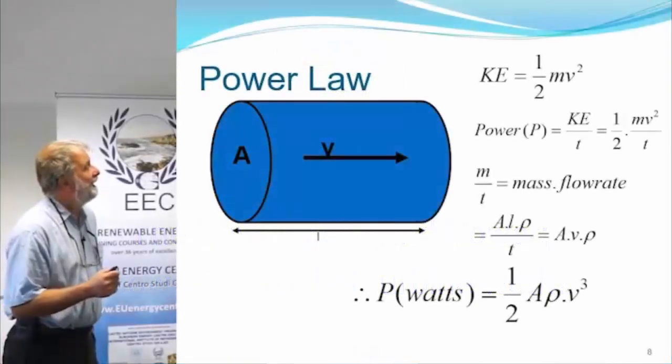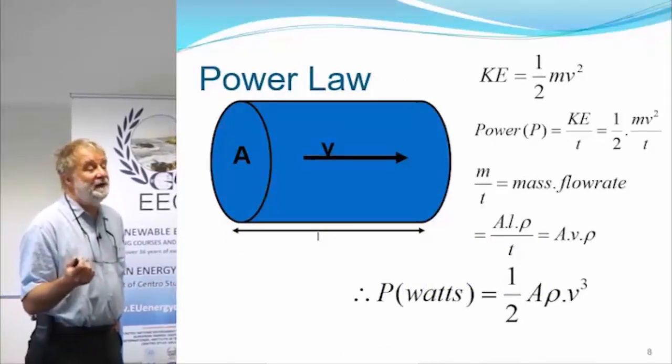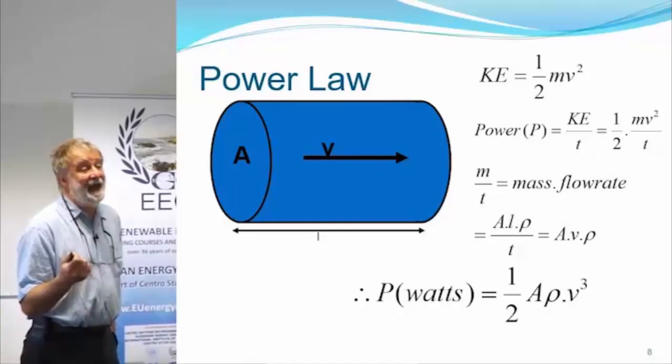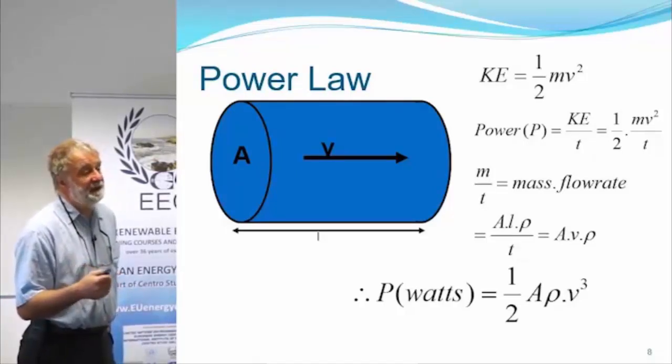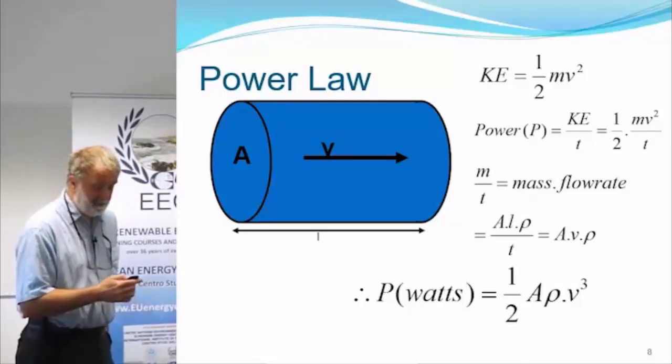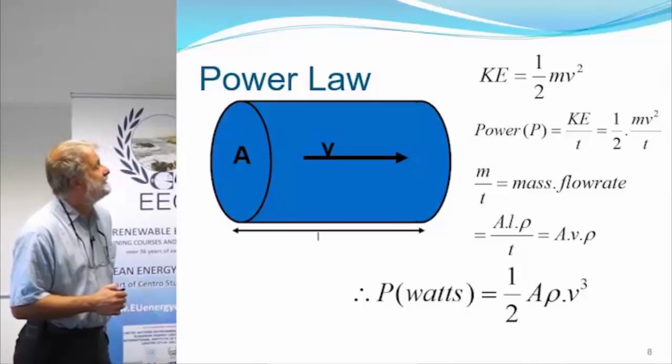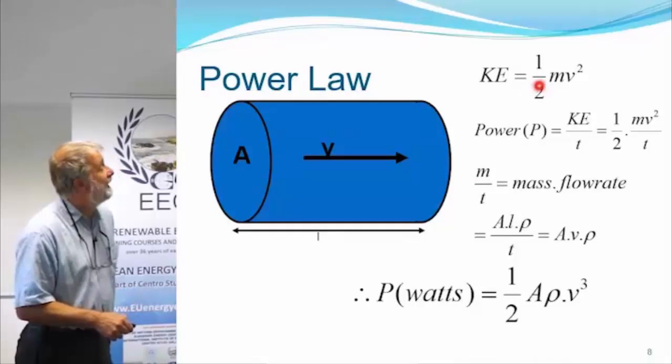A wind turbine basically converts the kinetic energy in the moving mass of the wind into rotational energy and then into electrical energy via a generator. And you'll remember from your early physics that kinetic energy is half mv squared.